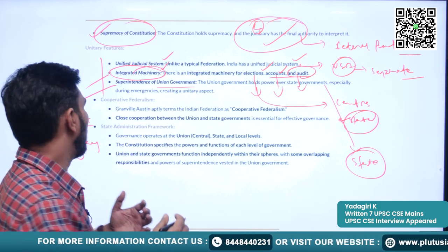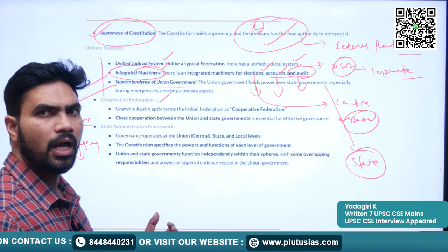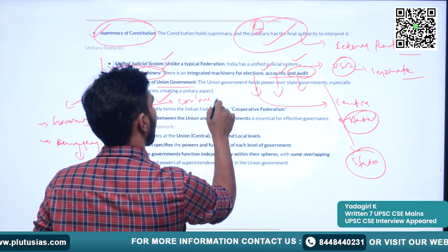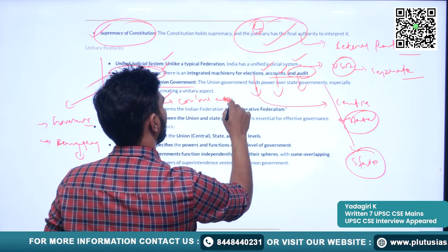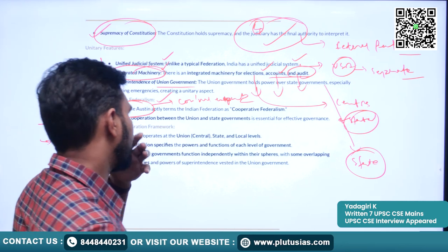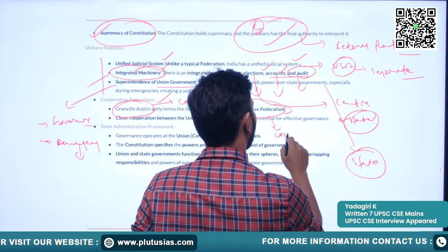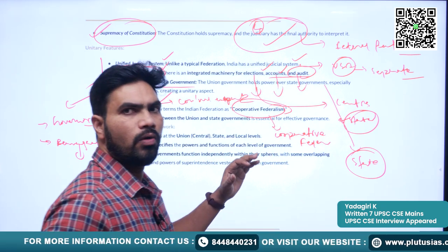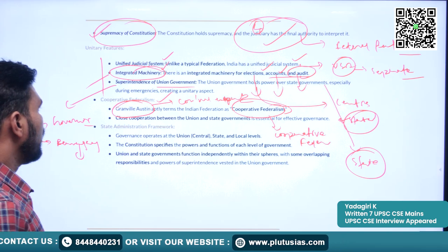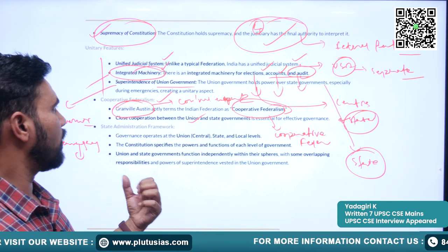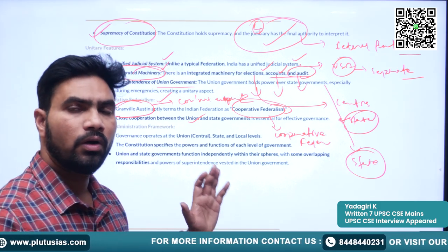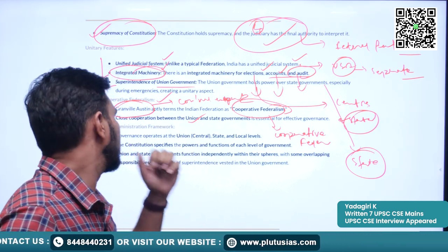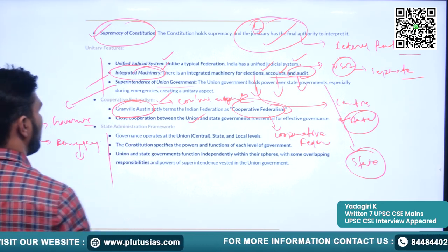India is a blend of both federal and unitary features. The concept of cooperative federalism has arisen in India. Granville Austin, a constitutional expert, called Indian federation 'cooperative federalism.' We also call it quasi-federalism, meaning half federalism. Close cooperation between the union and state governments is essential for effective governance, which is why Austin used this term.